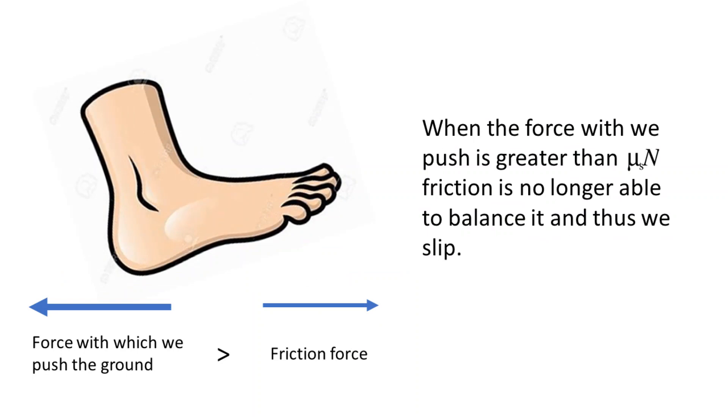When the force by which we push the ground backwards is greater than the static friction, the static friction is no longer able to oppose the relative motion between our sole and the ground. As a result, we slip. Fortunately, the impact was not great enough to break our bones. So you better know that slipping occurs when there is a relative motion between two surfaces.